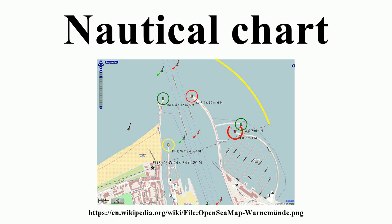Tidal races and other strong currents have special chart symbols. Tidal flow information may be shown on charts using tidal diamonds, indicating the speed and bearing of the tidal flow during each hour of the tidal cycle.